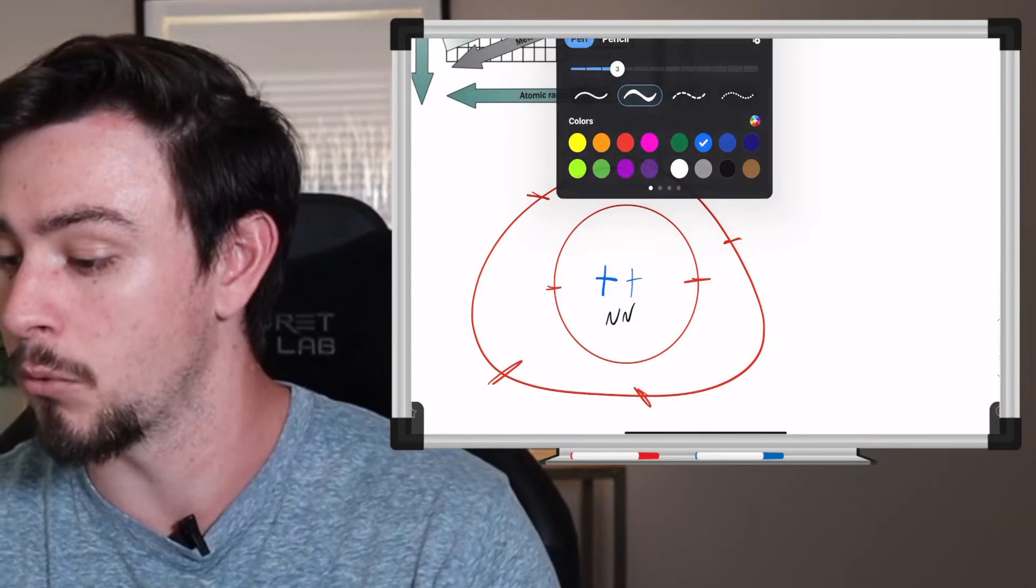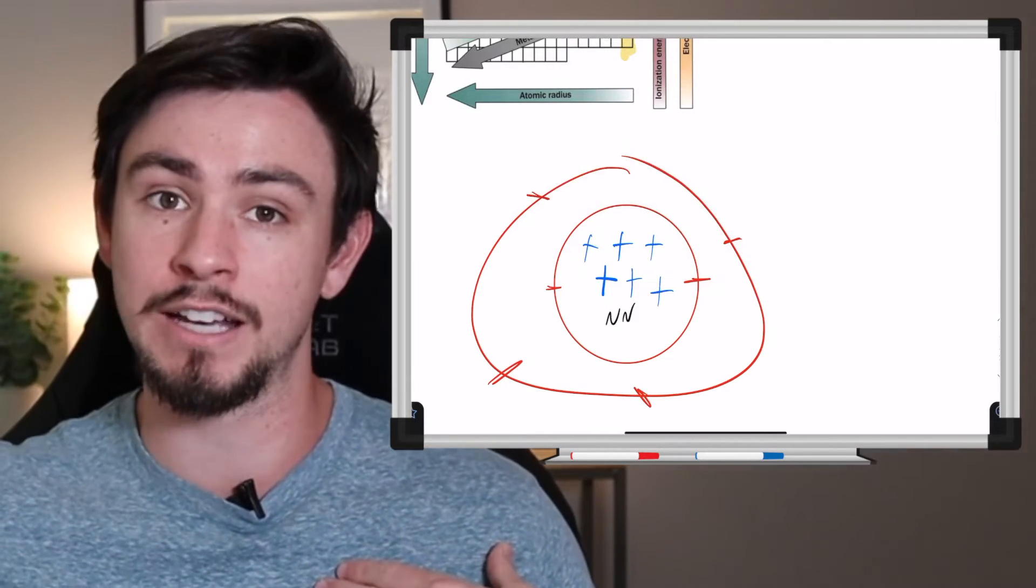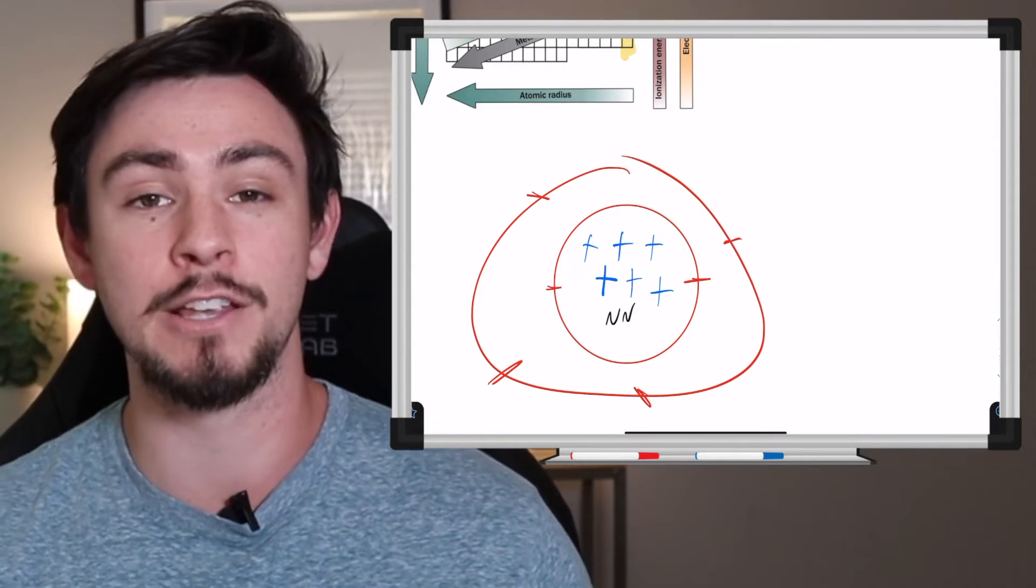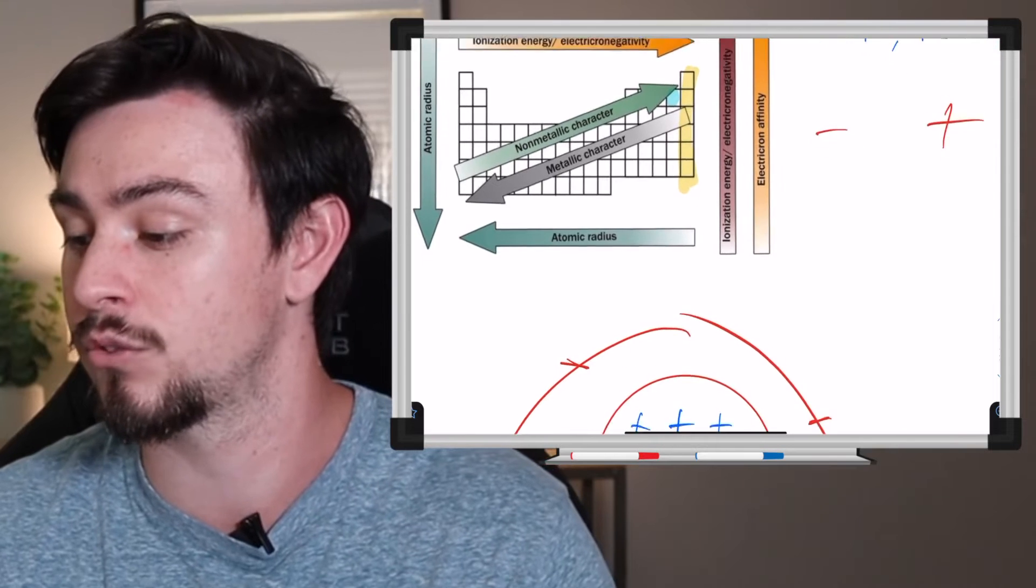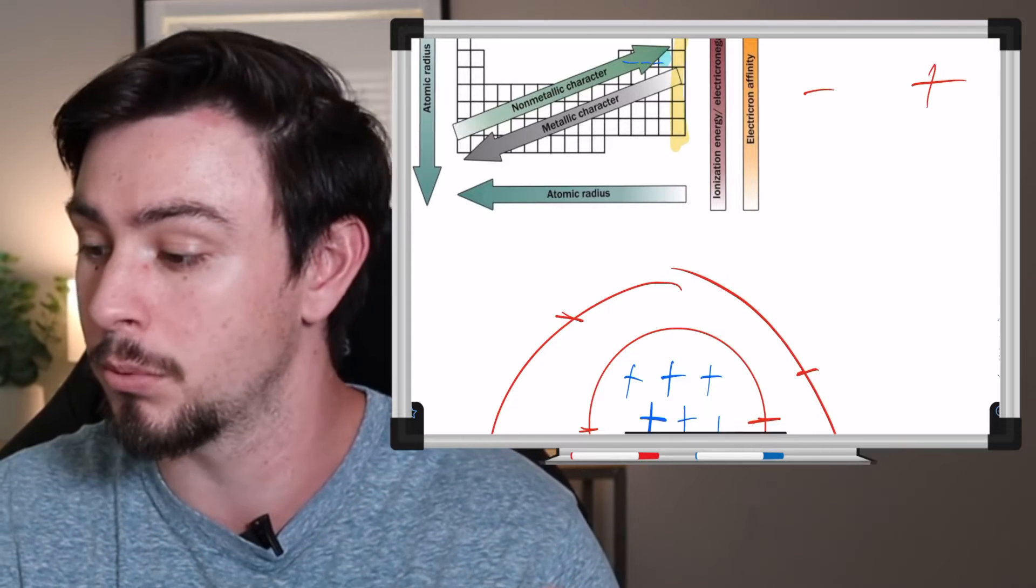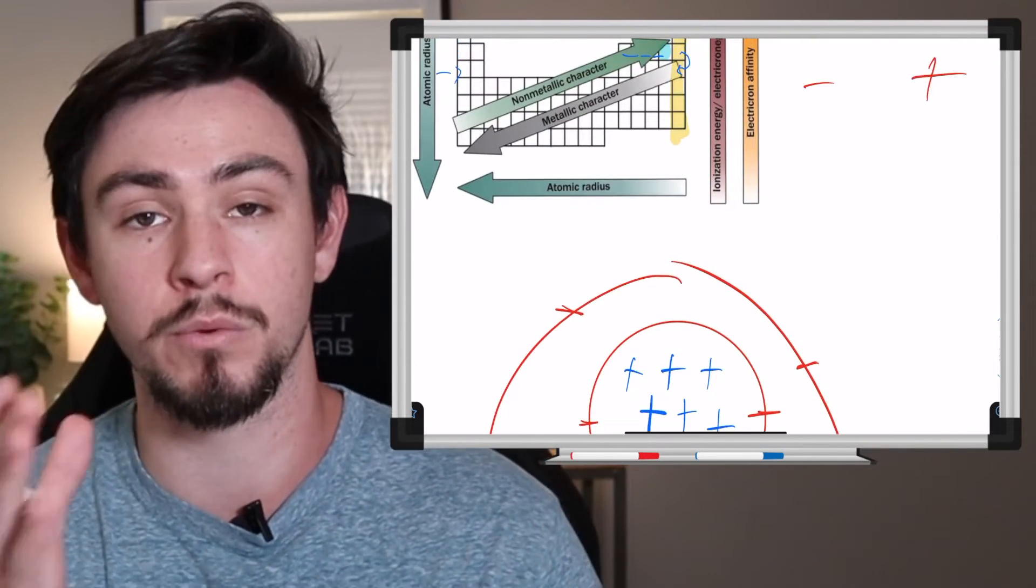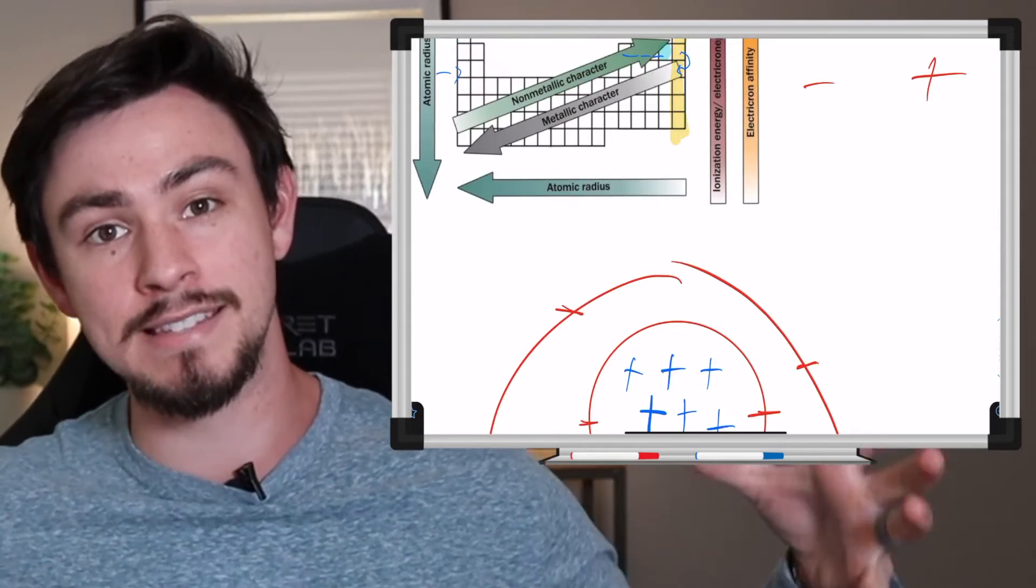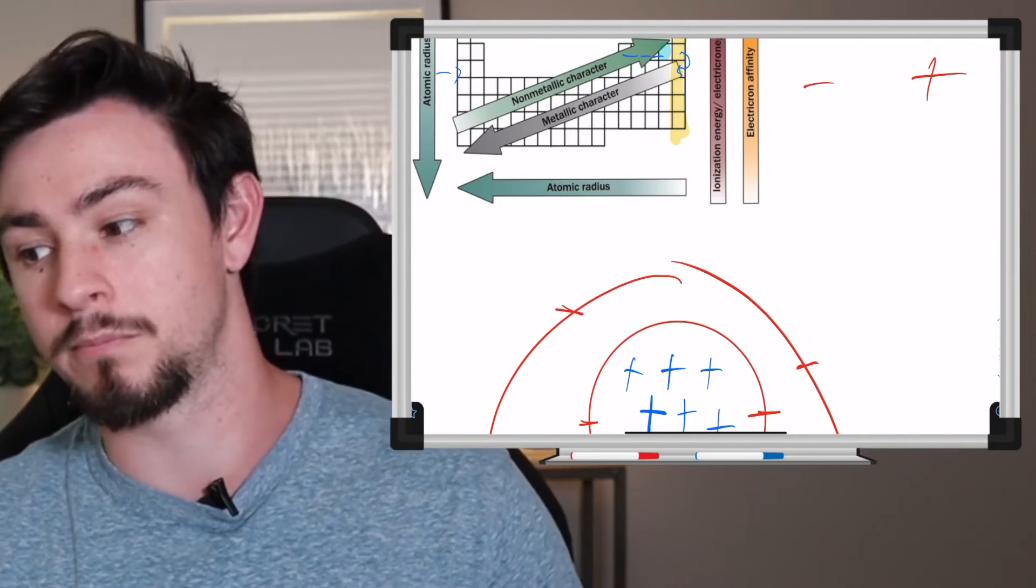And the reason is that there's two ways to increase your draw on electrons. You can either get more positive, so you can add protons, or you can decrease the distance from that electron to your protons. Now the only way that these elements can do that is by decreasing their number of valence shells. And so the reason that fluorine is going to be the most electronegative is because it's in that sweet spot of it's got the most protons it possibly can before it has to either become a noble gas and then kick down to the next row where you add another valence shell.